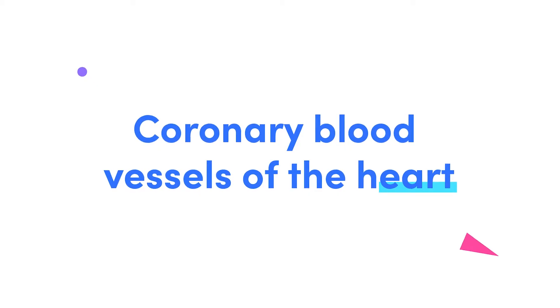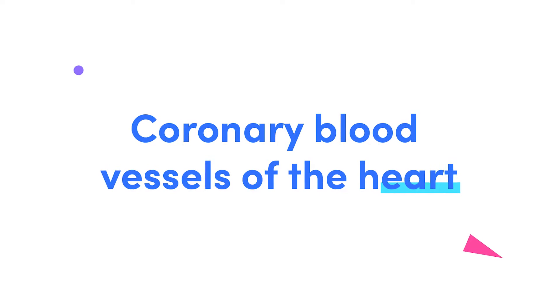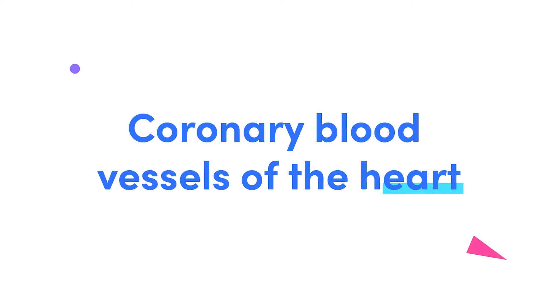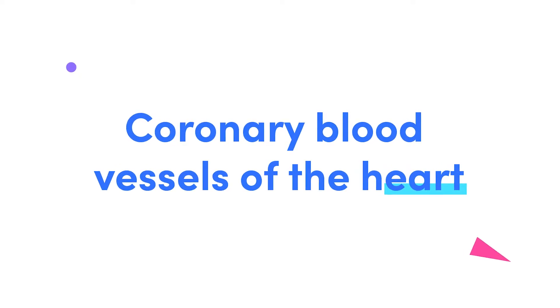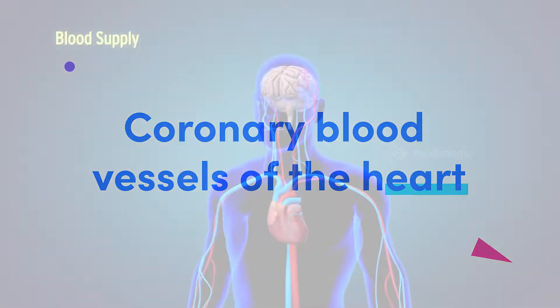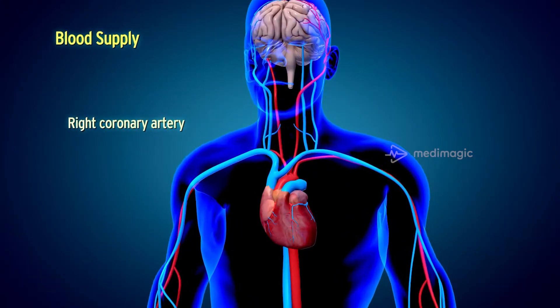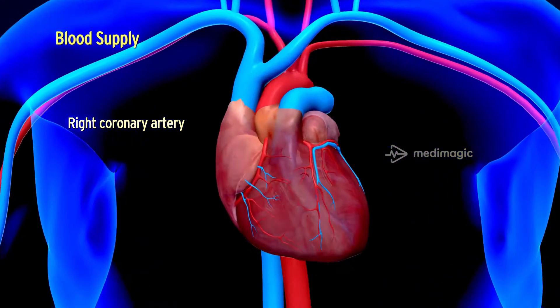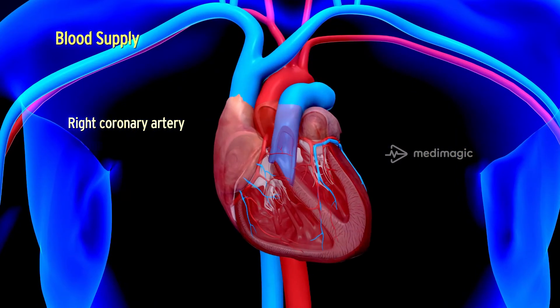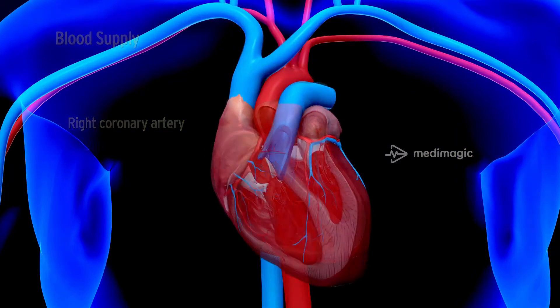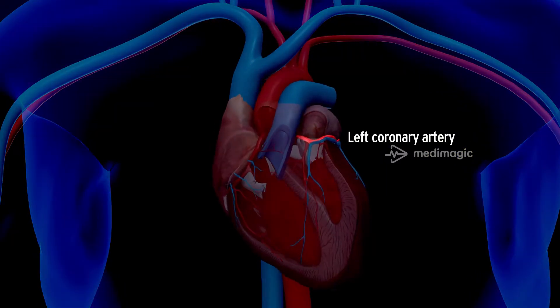To start with, let's learn a bit about the coronary blood vessels of the heart. These blood vessels that send oxygen and energy to the heart are the right coronary artery and the left coronary artery.